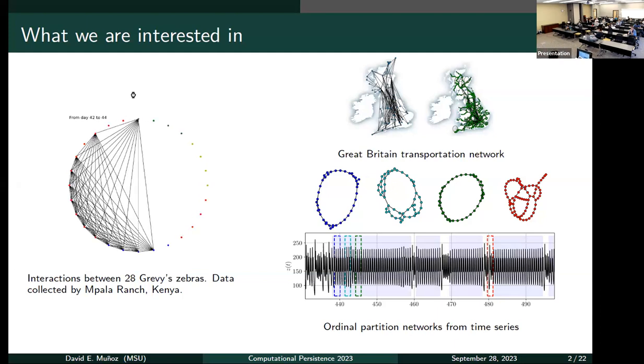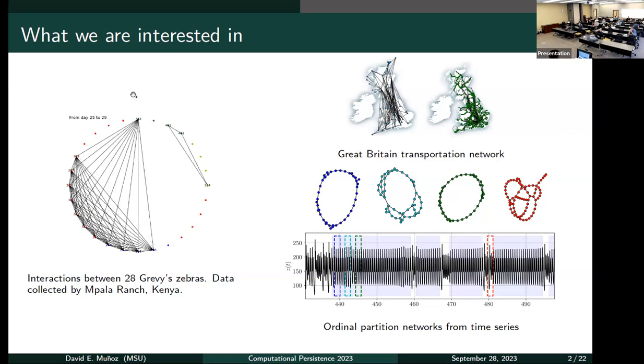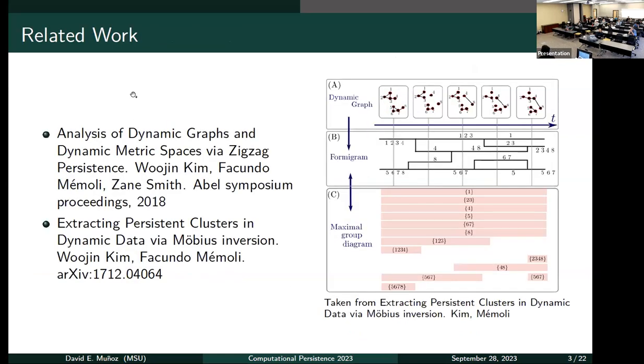Our goal is to use zigzag persistence to study the structure of these networks, finding how the structure changes in time. This is some related work in a similar context from Munch, Kim, and Memoli.